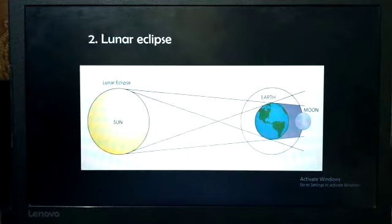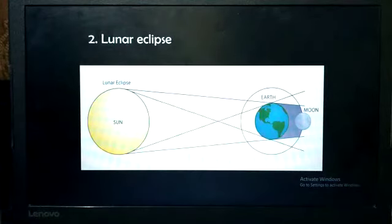Lunar eclipses can last for a few hours, but total solar eclipses last only a few minutes. It is advised that one should not look at the sun directly during solar eclipse as it can permanently damage the eyes.